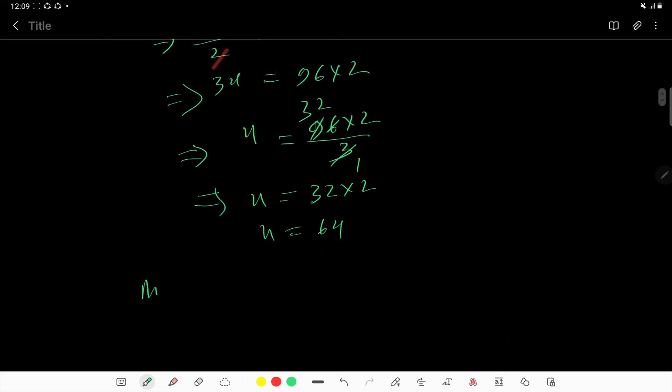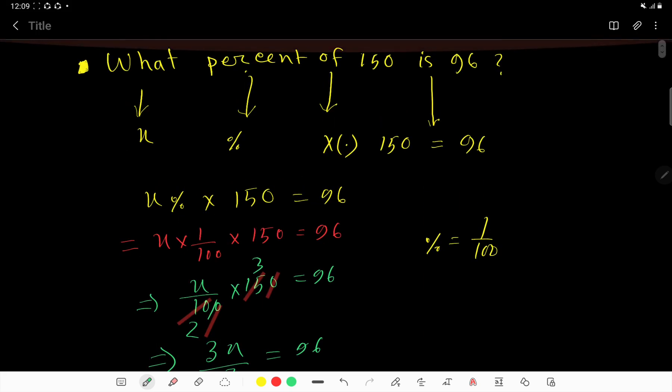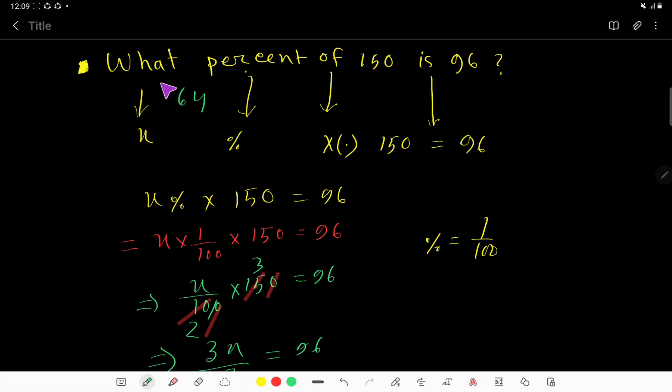So the answer is 64 percent. What percent of 150 is 96? That is 64 percent. So by applying this translation method, you can solve most problems of percentage. Thank you for viewing this video. Be well.